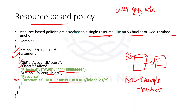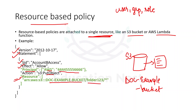If I want to give a specific path in which users can upload files, I have to specify it under Resource. The policy is attached to document-example-bucket, but inside it there is a folder named 123. So this policy would be applied at the folder level — all users in this account can put objects only under this particular folder of this particular bucket.